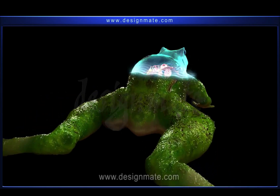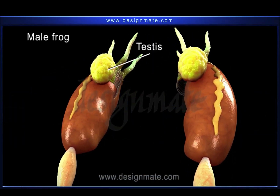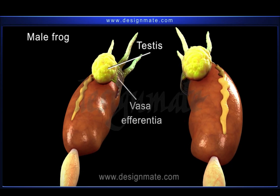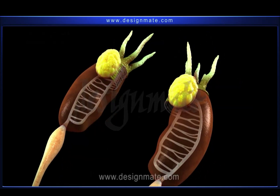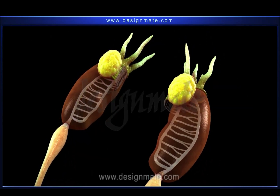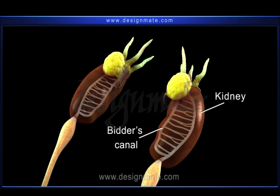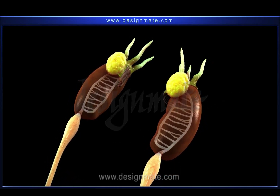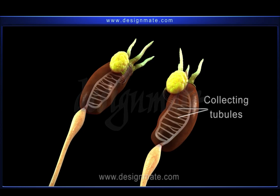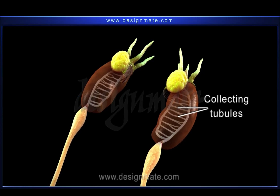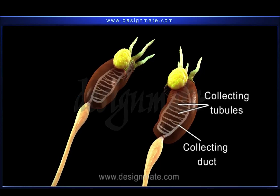In summary: the principal reproductive organs of a male frog are a pair of testes along with vasa efferentia. The vasa efferentia open into the Bidder's canal in the kidneys. This Bidder's canal communicates through transverse collecting tubules which join to form a longitudinal collecting duct.